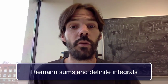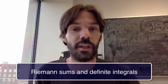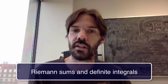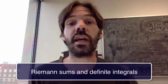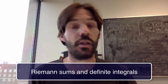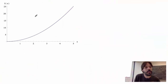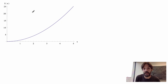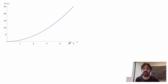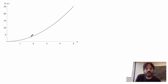Let's try to be more precise and rigorously define the limiting process for calculating the area under the graph of a function. I'll choose an arbitrary function f of x — this could be velocity as in the previous video, but now it can be any function — and I want to calculate the area under the curve between x equals a and x equals b.